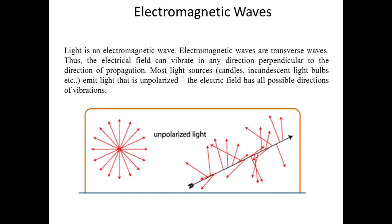These fields are mutually perpendicular to each other as well as to the direction of wave propagation. These waves are called transverse waves because the electric field or magnetic field can vibrate in any direction perpendicular to the direction of propagation.